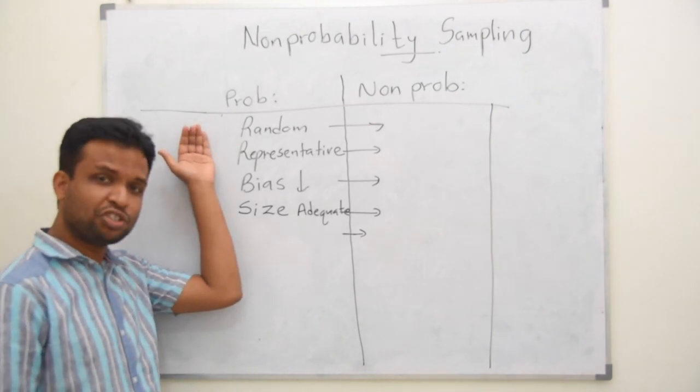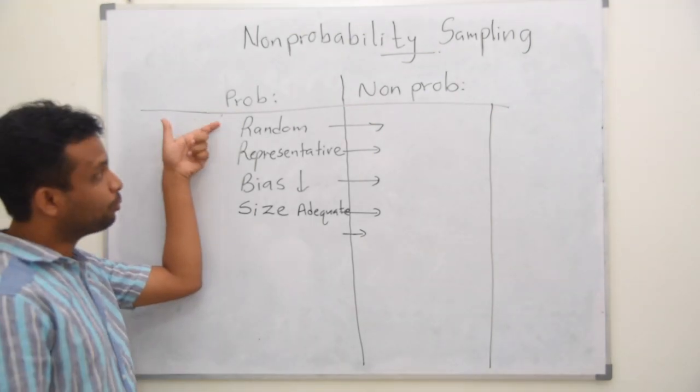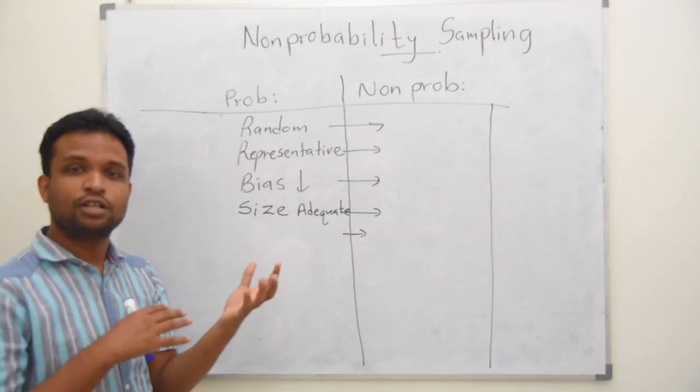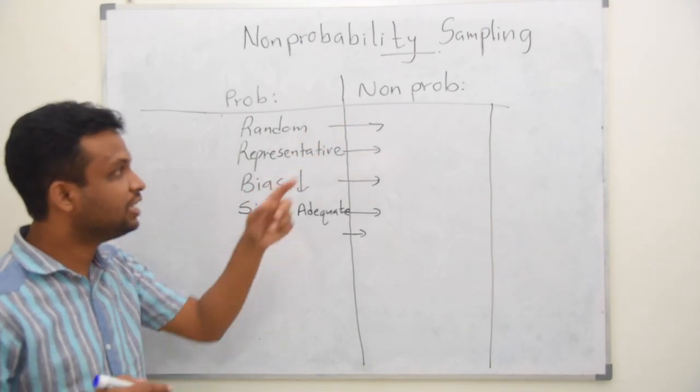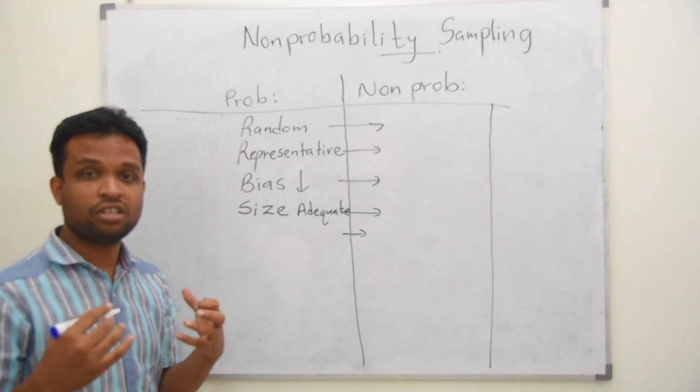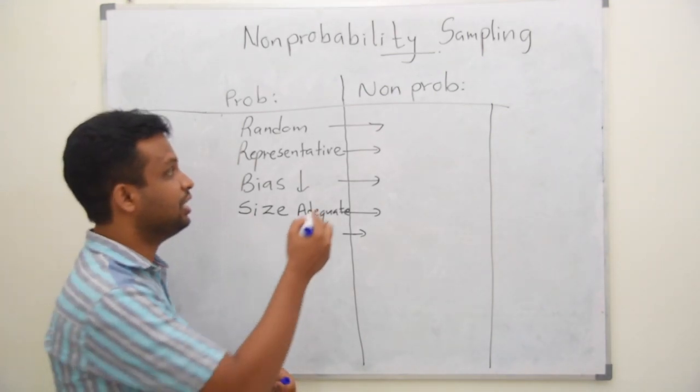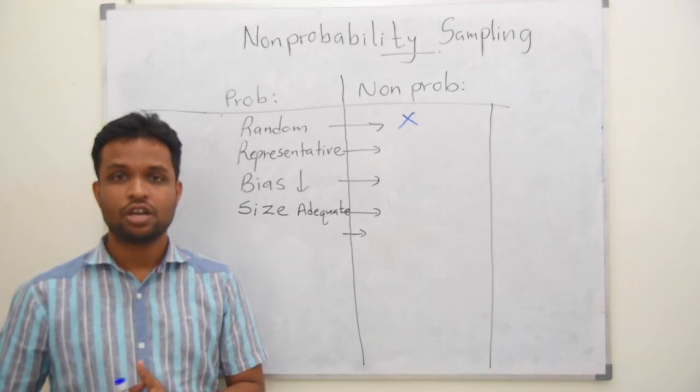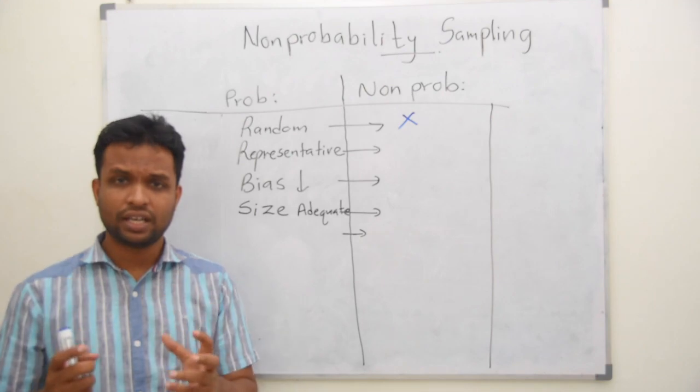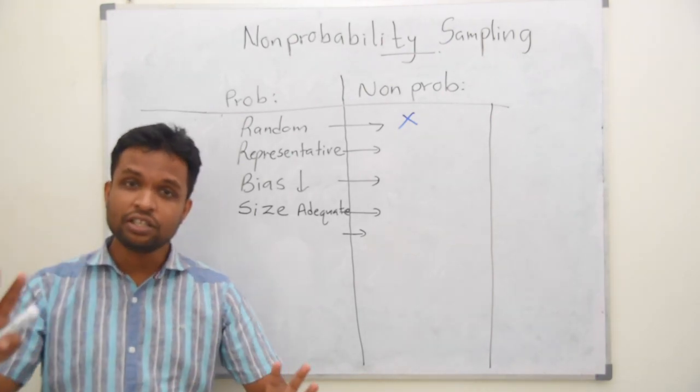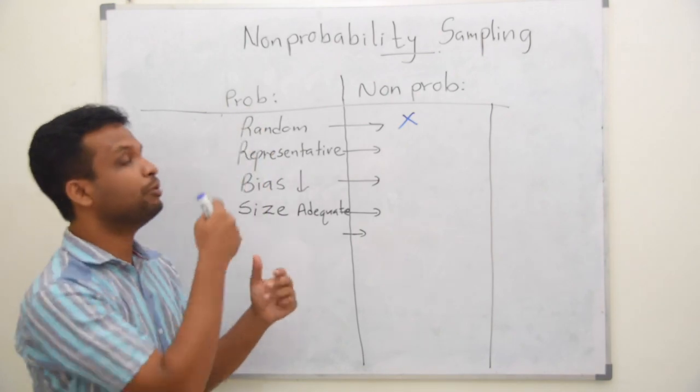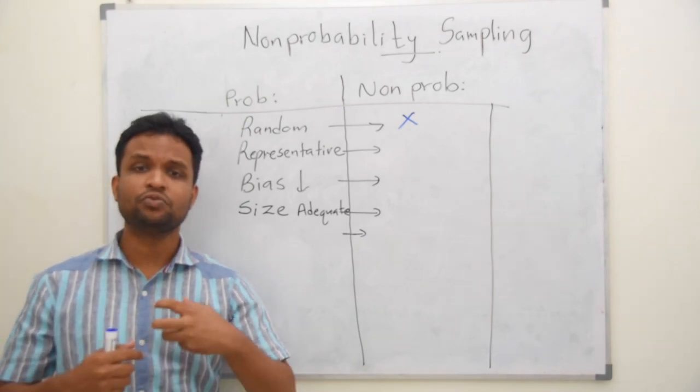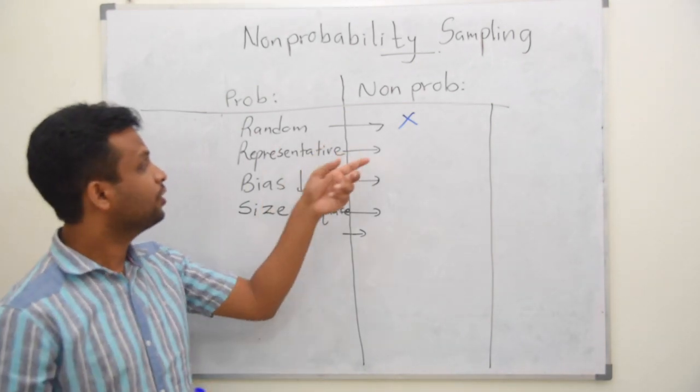We know that if you have watched the previous videos, Probability Sampling, we try to maintain randomness throughout the sampling procedure. But here in Non-probability Sampling, we are not much interested in random sampling. We are also interested in representativeness. We are trying to take a representative sample covering the whole population in Probability Sampling Techniques. But when it comes to Non-probability Sampling, we are not much worried about representativeness.